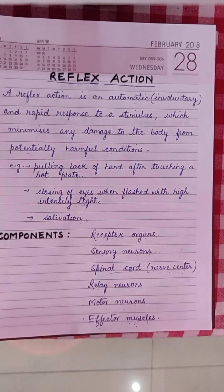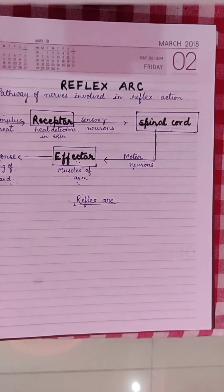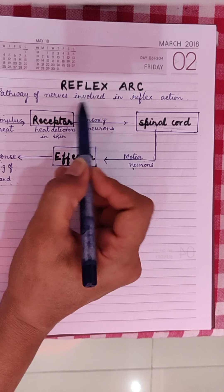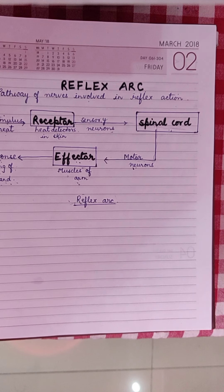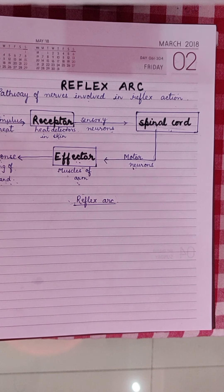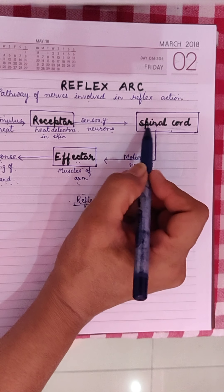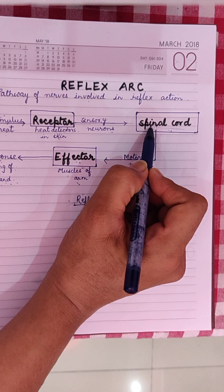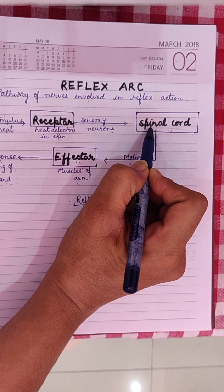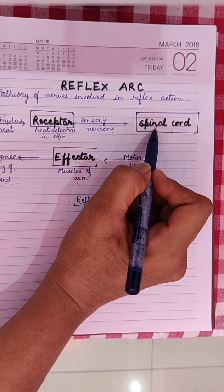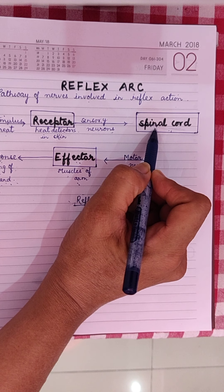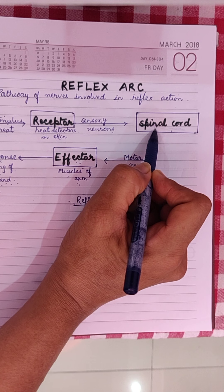This path followed in a reflex action is called the reflex arc — the pathway of nerves involved in a reflex action. In a reflex action, the spinal cord is responsible for the reflex movement. The message will go to the brain, but thinking will be done later.